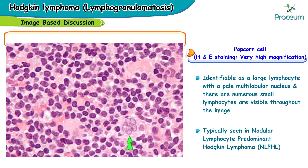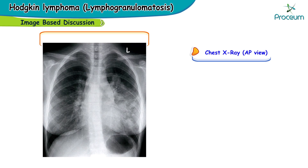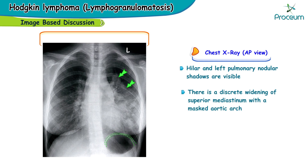You can see numerous lymphocytes all over the slide. Here's the chest X-ray, and we can clearly appreciate hilar and left pulmonary nodular shadows, along with a discreet widening of the superior mediastinum with a mass at the aortic arch.